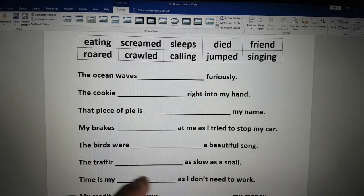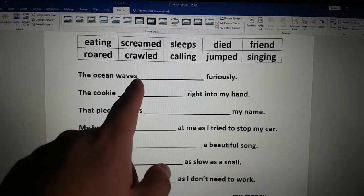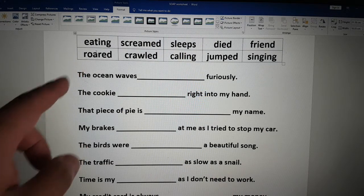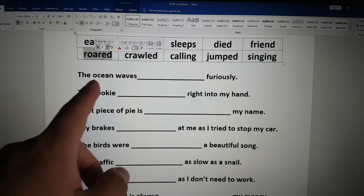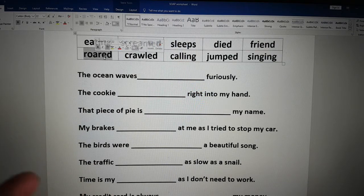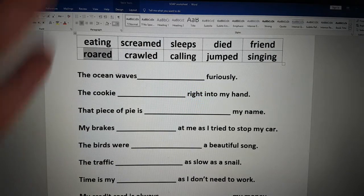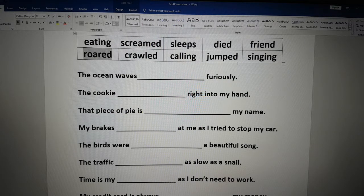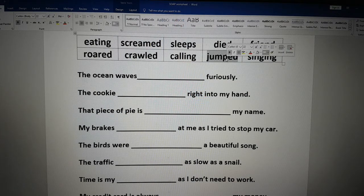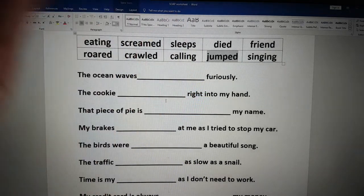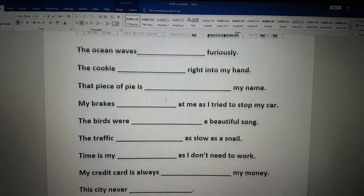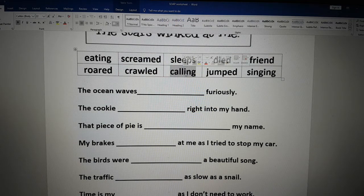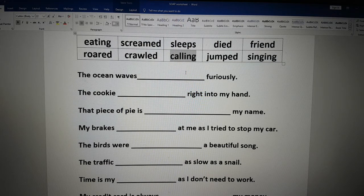And the answers are. The ocean waves, the waves of the ocean, what did they do furiously? In this case, we're saying that the ocean roared. An ocean cannot really roar, right? A lion can roar. So we're making the ocean like a lion and it roars. That is personification. The cookie jumped into my hand. Can a cookie jump? No, of course not. But in this poem, the cookie jumped into my hand and then you ate the cookie. That piece of pie is calling my name.